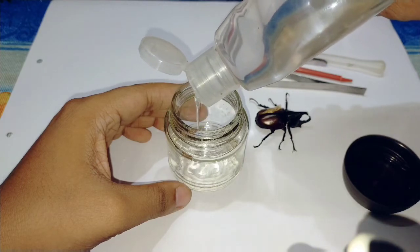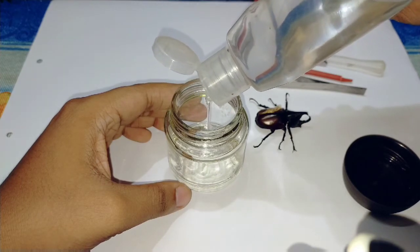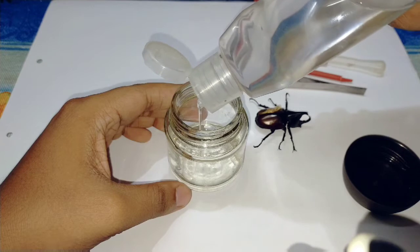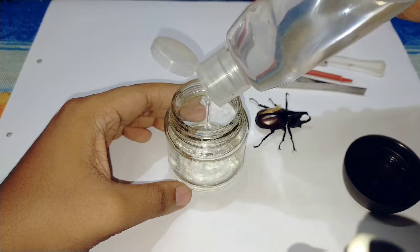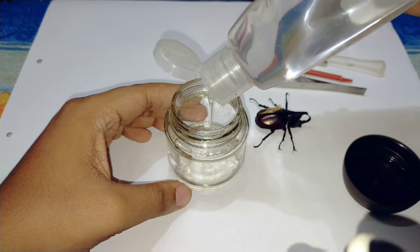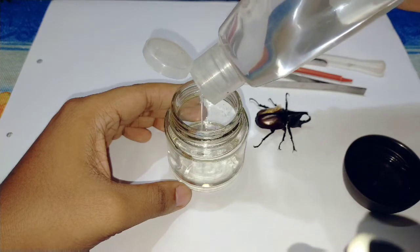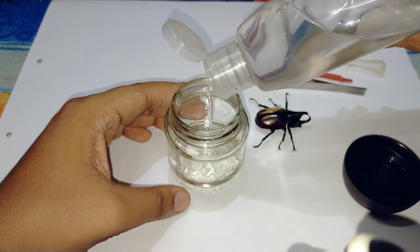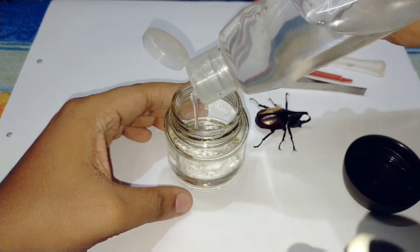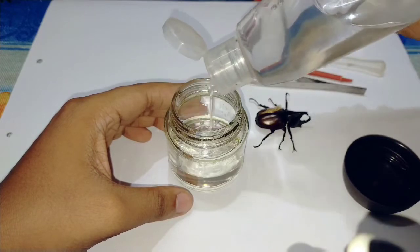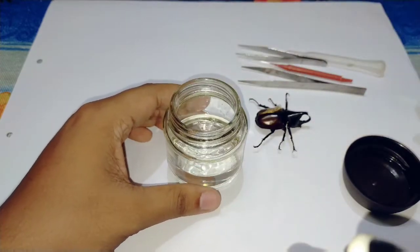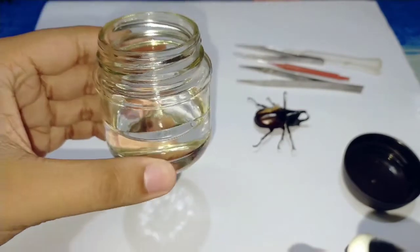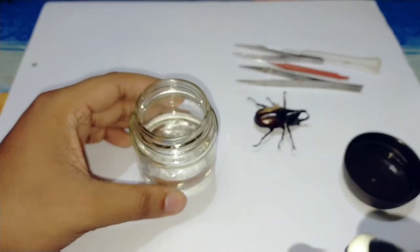You can see I am pouring very slowly, so that if bubbles are created, it will be less. Many bubbles can make it difficult for removing, so keep in mind. You can see I have poured the sanitizer half of it.